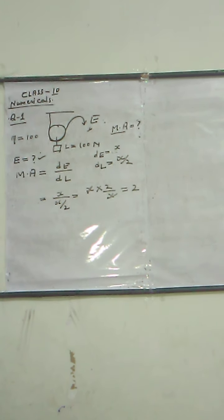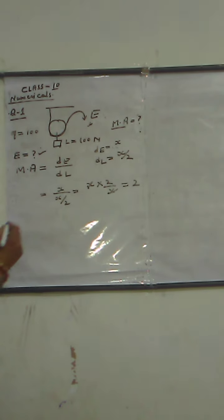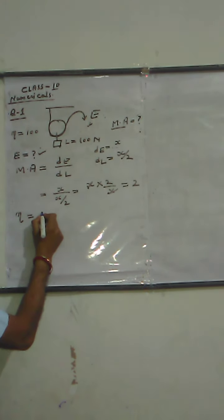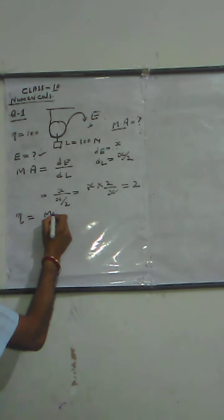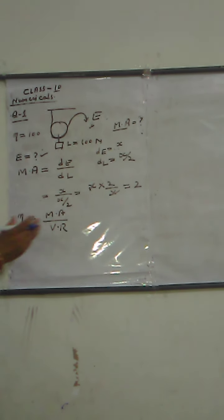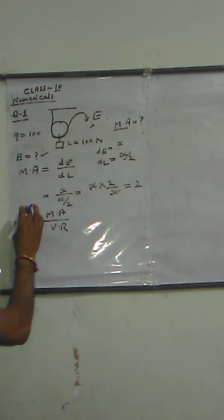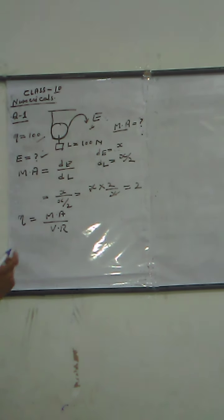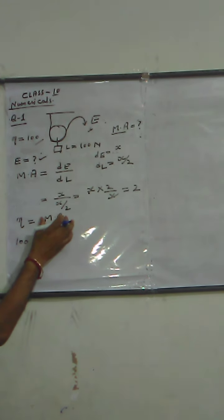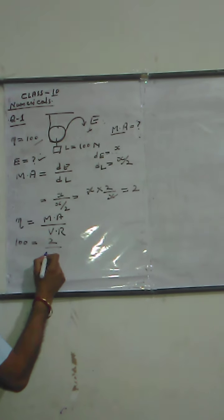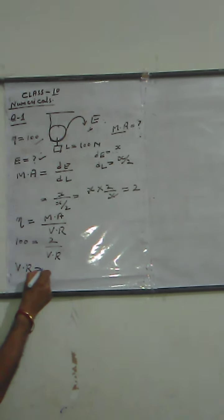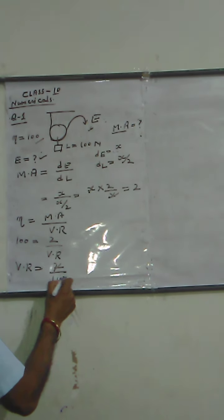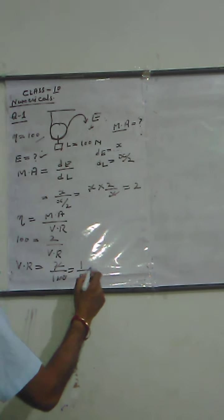Now we find velocity ratio. We know the formula: efficiency equals mechanical advantage upon velocity ratio. Mechanical advantage is 2 and efficiency is 100. Putting the values: 100 equals 2 upon velocity ratio, so velocity ratio equals 2 divided by 100, which gives 1 over 50. So velocity ratio is 1/50.